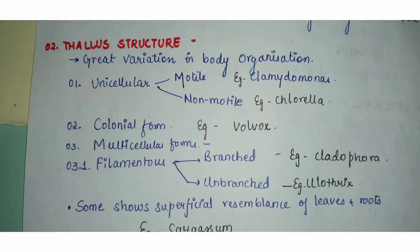Our second characteristic is thallus structure. The algal body is called a thallus because, unlike a normal plant where we can distinguish the root system, shoot system, leaves, and stem, the algal body is totally undifferentiated — it is just a collection or mass of cells, and so it is termed a thallus.